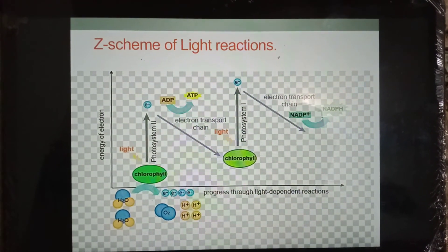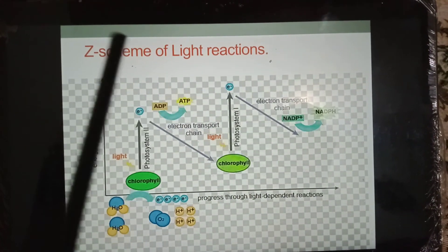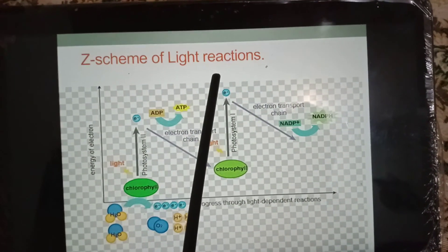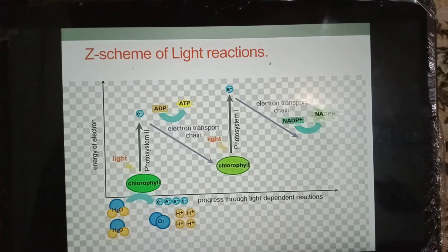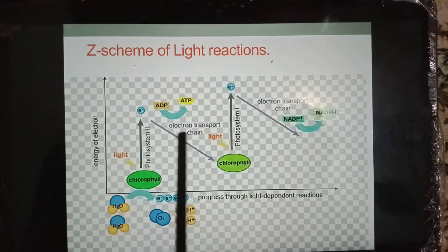As you can watch on your screen, the whole series of light reactions is like Z. So it is called the Z-scheme due to its Z-shaped flow chart.